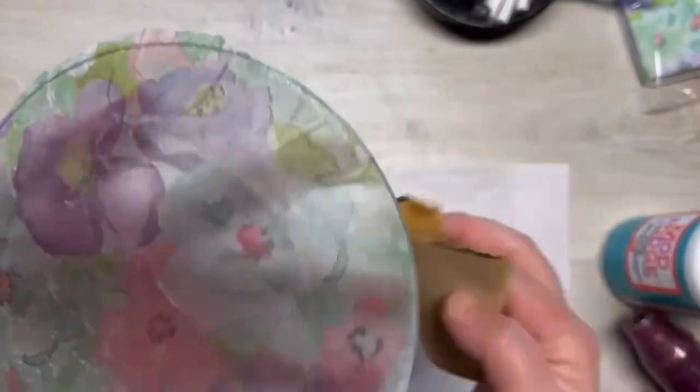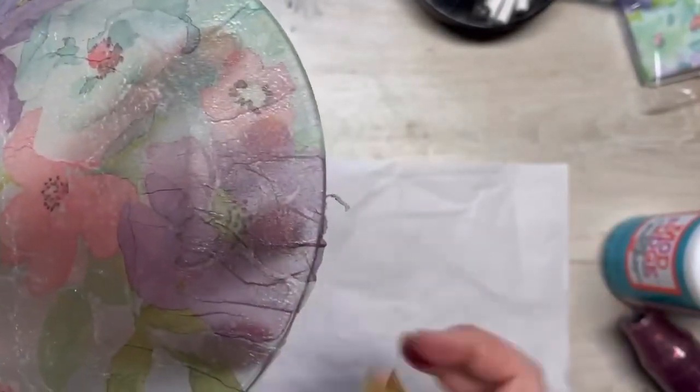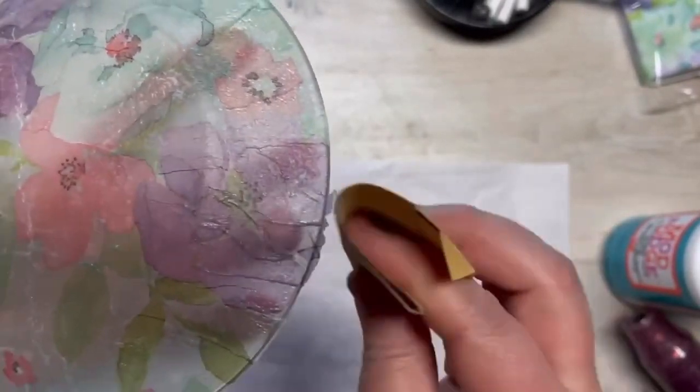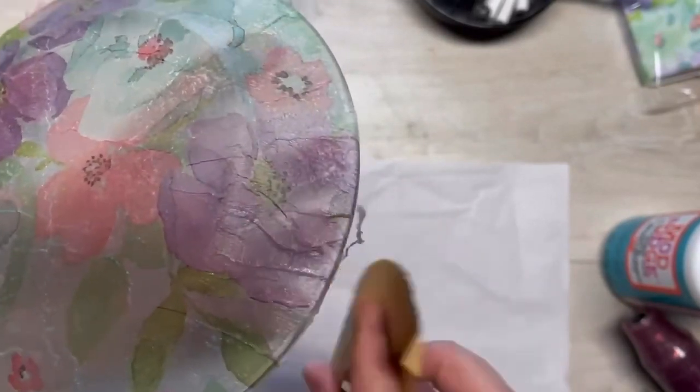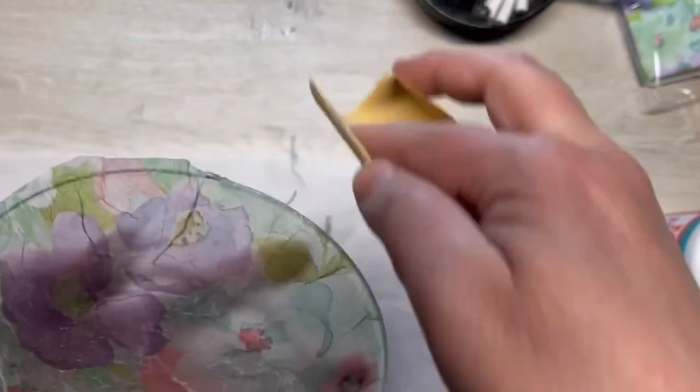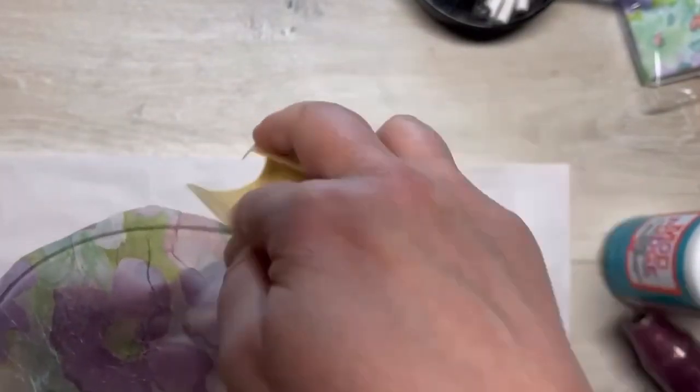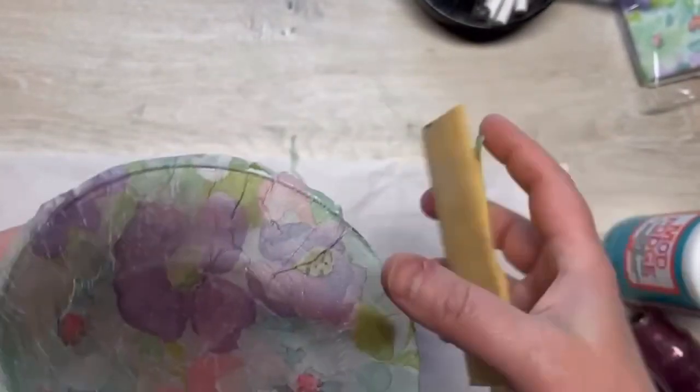I do put a final coat of the dishwasher safe Mod Podge once this is fully dry. I'll put another coat on. And then you have to let it dry. If you want to put it in the dishwasher, it has to cure for like 21 days.